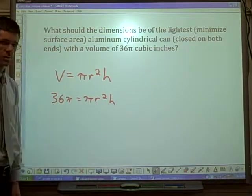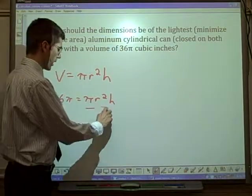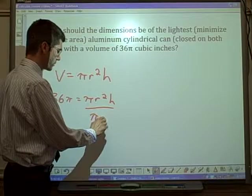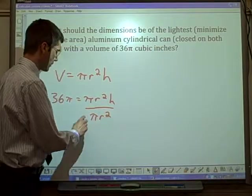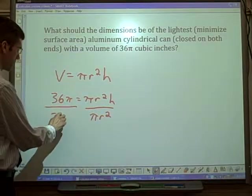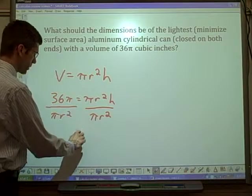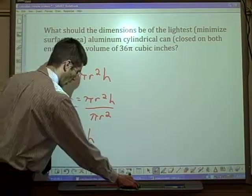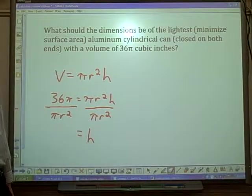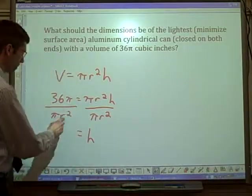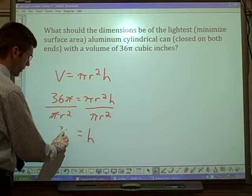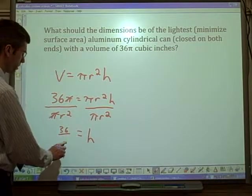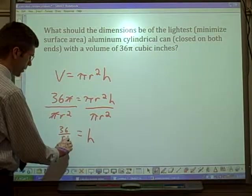The π's will cancel when we divide by πr². h is equal to... I have two sets of equal marks, I guess it's super equal. π's cancel. 36 over r².